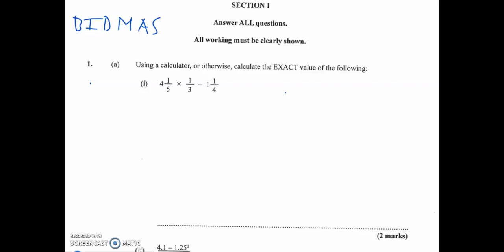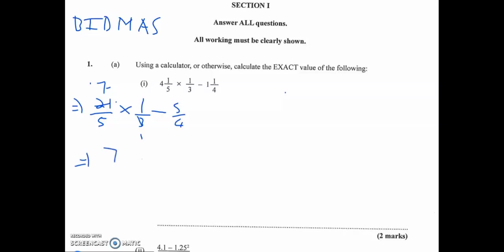First, I'll change all the fractions to improper fractions. Four and one-fifth: multiply five by four to get 20, add the numerator one, giving 21/5. Times one-third. Minus one and a quarter: four times one plus one gives 5/4. Doing the multiplication first, three goes into 21 seven times and into three once, giving 7/5.